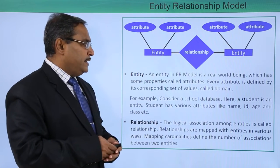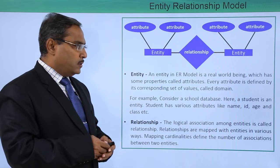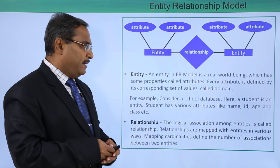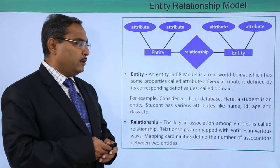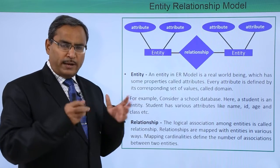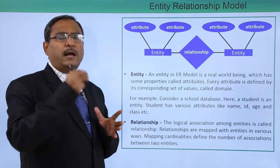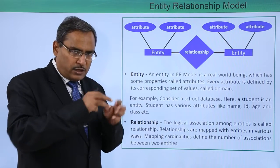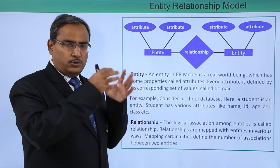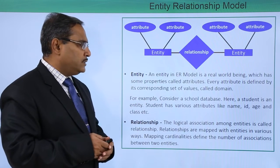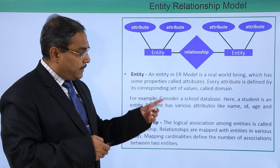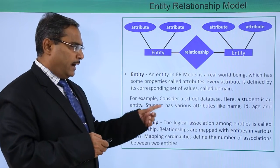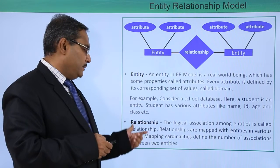An entity in the ER model is a real world being which has some properties called attributes. Every attribute is defined by the corresponding set of values called the domain. Domain is the set of values from where you can pick up one value to instantiate one attribute. For example, consider a school database. Here a student is an entity. A student has various attributes like name, ID, age, and class.